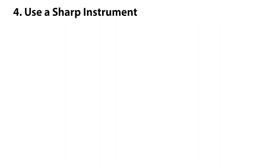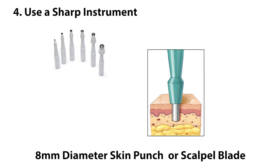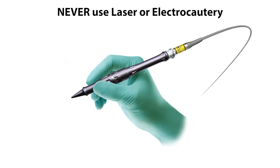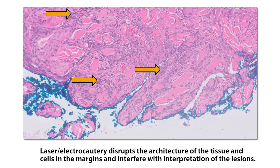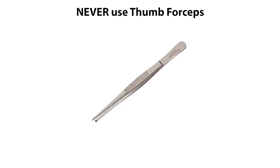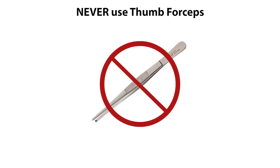Number four: use a sharp instrument such as an eight millimeter diameter skin punch biopsy or scalpel blade. Never use laser or electrocautery to obtain these biopsies, as these instruments burn tissue. Never use thumb forceps, as these will crush tissue.